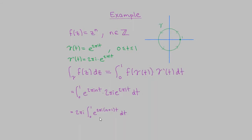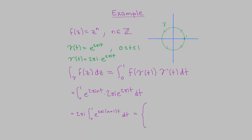This integral can be done using basic calculus — you can separate the integrand into real and imaginary parts. The value depends on what n is. If n equals negative 1, the integrand is the constant function 1 and the integral evaluates to 2πi. When n is not negative 1, the integral evaluates to 0. It's worth keeping this example in mind because it's going to come up again later.